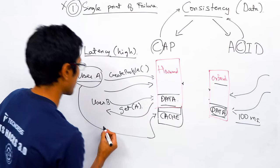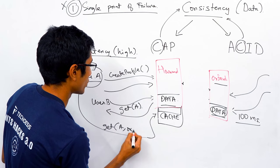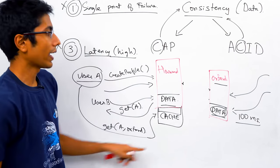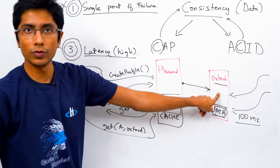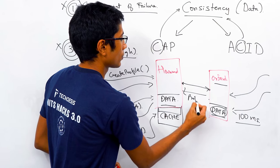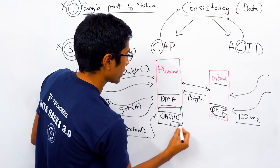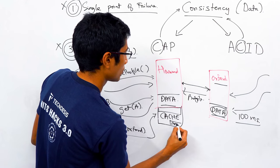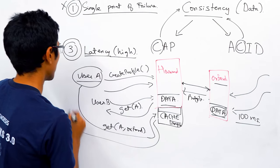The Oxford server gives back a response with the profile. This profile is then stored in the Harvard cache and returned to the user.